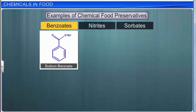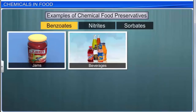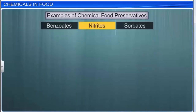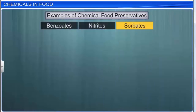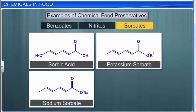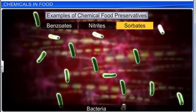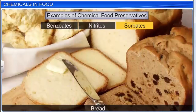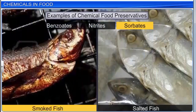Sodium benzoate protects food against yeasts and molds, and is used in jams, beverages, salad dressings, pie and pastry fillings, etc. Sodium nitrite is used to fix the colors in preserved fish and meat. The sorbate family of compounds — available as sorbic acid, potassium sorbate, sodium sorbate, or calcium sorbate — are effective against yeasts, molds, and selective bacteria, and are widely used in cheese, dips, yogurt, bread, icings, salads, beverages, olives, smoked and salted fish, and several other food items.